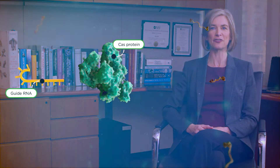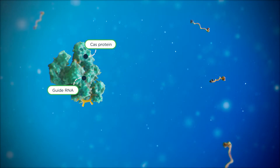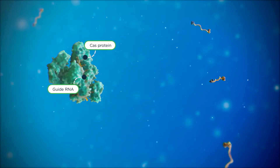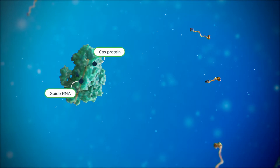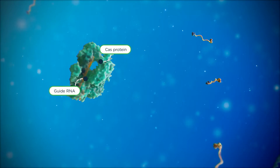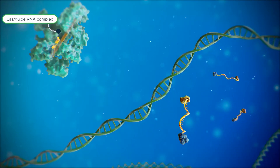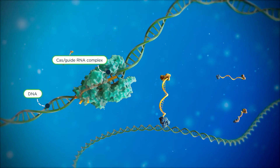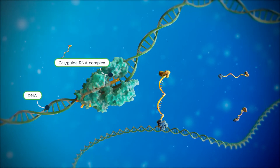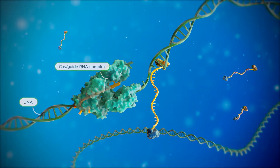So how does the Mammoth Biosciences technology work? First, we pair a Cas protein with a guide RNA that matches the exact sequence we want to detect. If the Cas guide RNA complex finds its target sequence in a test sample, Cas proceeds to cut the matching DNA or RNA apart.